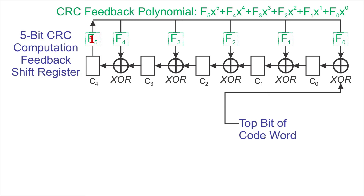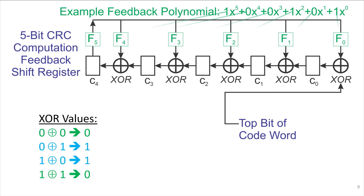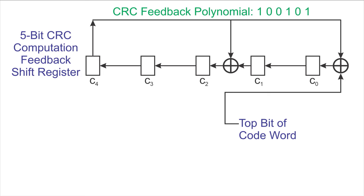Let's work an example. XOR facts: 0 XOR 0 gives 0; 0 XOR 1 or 1 XOR 0 gives 1; and 1 XOR 1 gives 0 — equivalent to 1-bit addition ignoring carryouts. We use the feedback polynomial x to the 5th plus x squared plus 1. Because a 0 f-bit does nothing, we can remove those XOR gates and redraw the hardware as a feedback shift register where only the 1-positions in the polynomial involve feedback through an XOR gate.